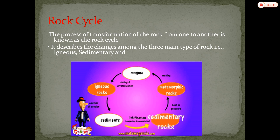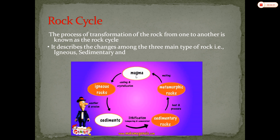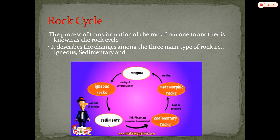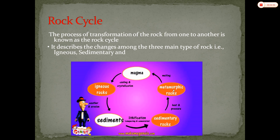As you can see in this picture, first the magma is there. When magma erupts onto the surface of the earth or solidifies inside the earth, igneous rocks are formed. When igneous rocks and metamorphic rocks are broken into small fragments or particles, they convert into sedimentary rock. When sedimentary and igneous rocks are subjected to great heat and pressure, they are converted into metamorphic rock.